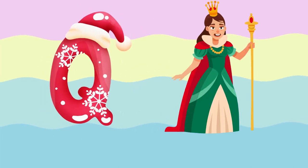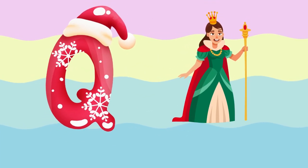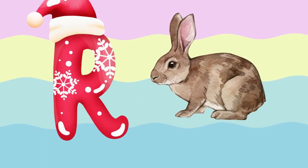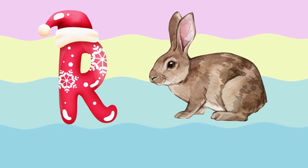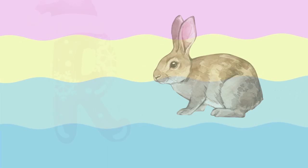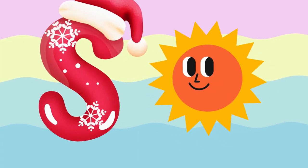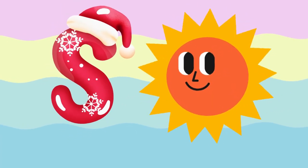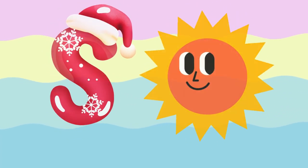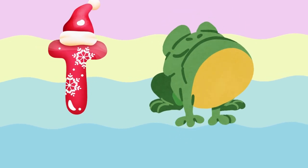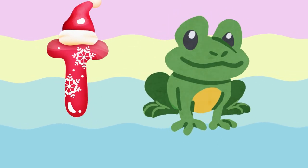Q is for queen, k-k-queen. R is for rabbit, r-r-rabbit. S is for sun, s-s-sun. T is for toad, t-t-toad.